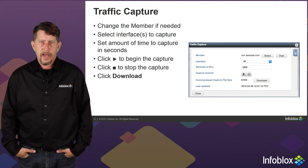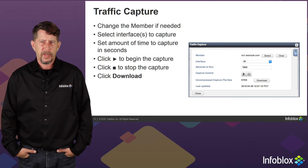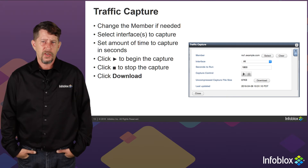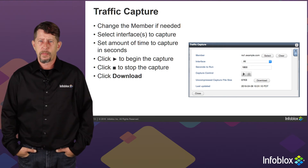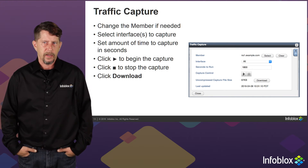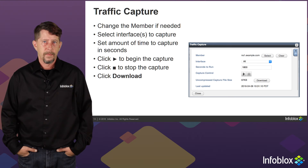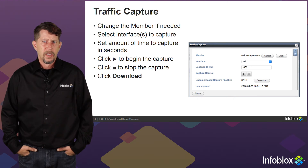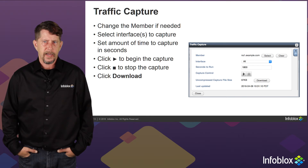In the traffic capture dialog, we have a couple of options. First, we can change the member — if we opened this dialog and realized we need to run the capture on another member, we can click Select and switch members. Then we pick which interfaces to run the traffic capture on. The Infoblox has numerous ethernet ports. Using All is advised because then you can see when packets are being directed to the wrong interface. We can set a maximum amount of time for the capture to run, and we have start and stop buttons. The size of the capture is displayed so that if it is growing too quickly, we can stop it before the time expires.